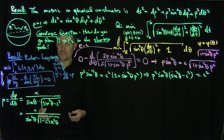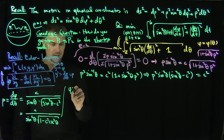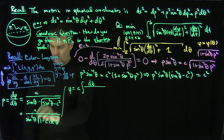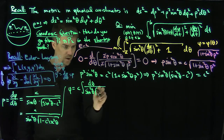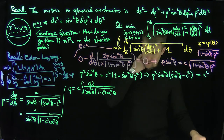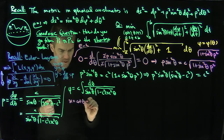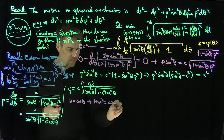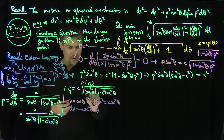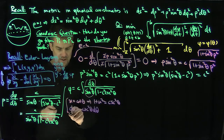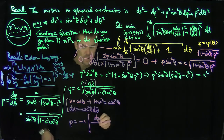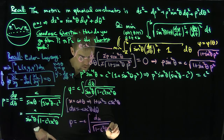Integrating with respect to θ, φ = c ∫ dθ / (sin²θ · √(1 − c² csc²θ)). I make the substitution u = cot θ, so that 1 + u² = csc²θ, and du = −csc²θ dθ = −dθ/sin²θ. Making this substitution, φ = −c ∫ du / √(1 − c²(1 + u²)).